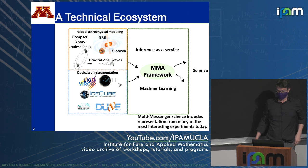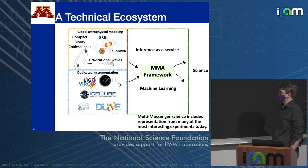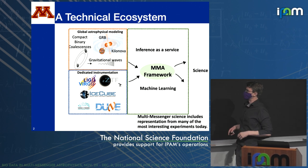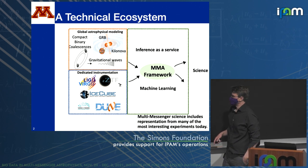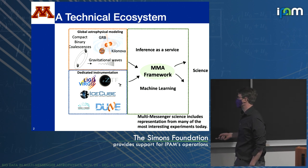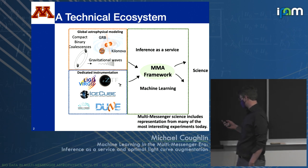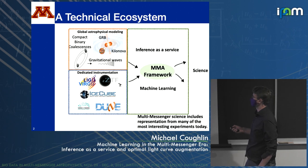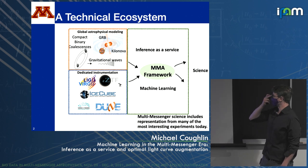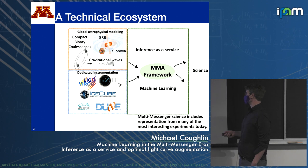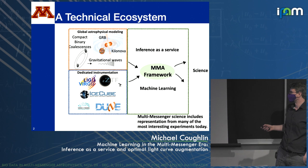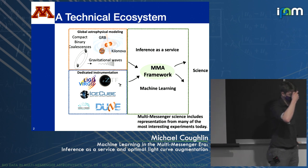There's a huge technical ecosystem being built. When I say technical ecosystem, I mean astrophysical modeling — not only folks doing numerical relativity for gravitational waves, but also those thinking hard about electromagnetic signatures, gamma-ray bursts, and kilonovae from neutron star mergers.